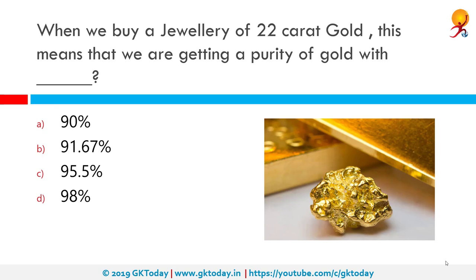When we buy jewelry of 22-carat gold, this means we are getting a purity of 91.67% gold. 24-carat gold contains 24 parts pure gold. 22-carat contains 22 parts pure gold and 2 parts of other metals added as alloy. 18-carat gold contains 18 parts pure gold with 6 parts of other metals.